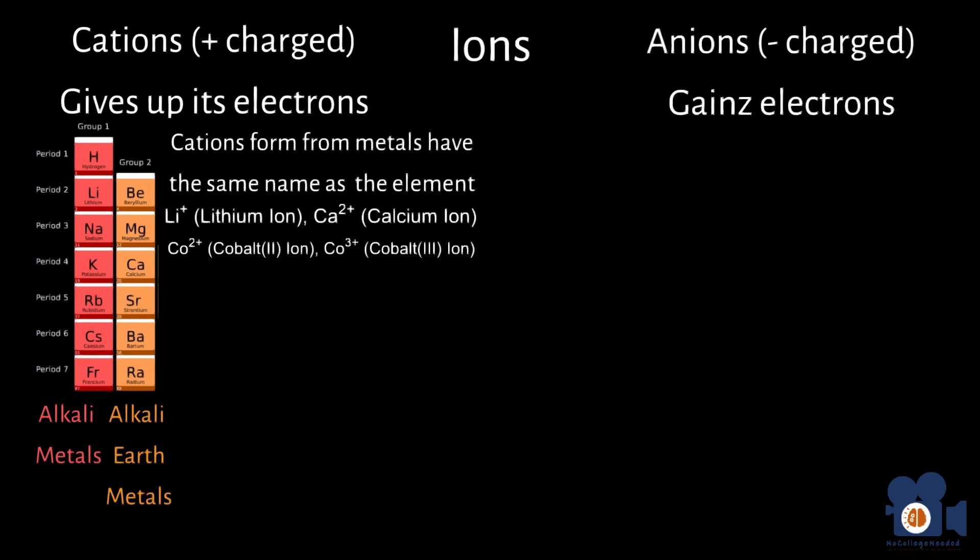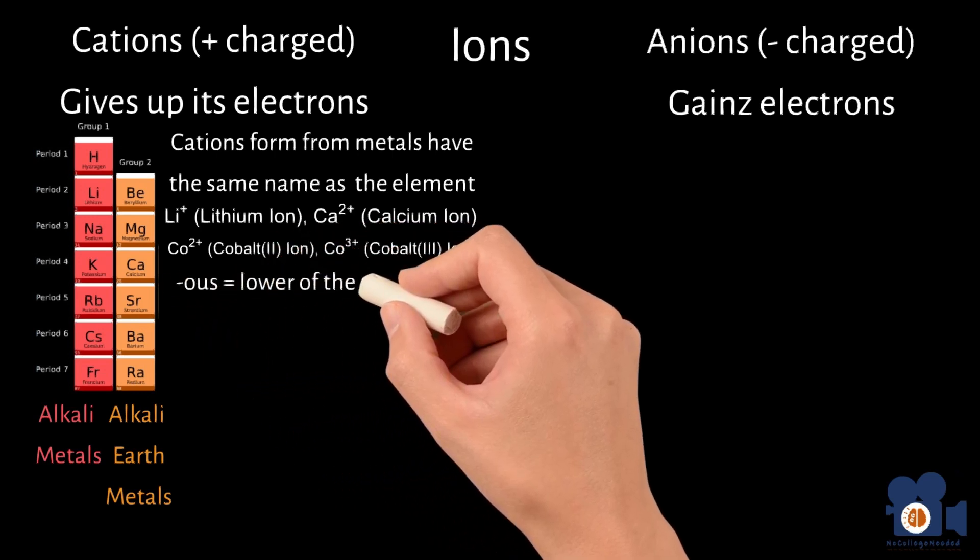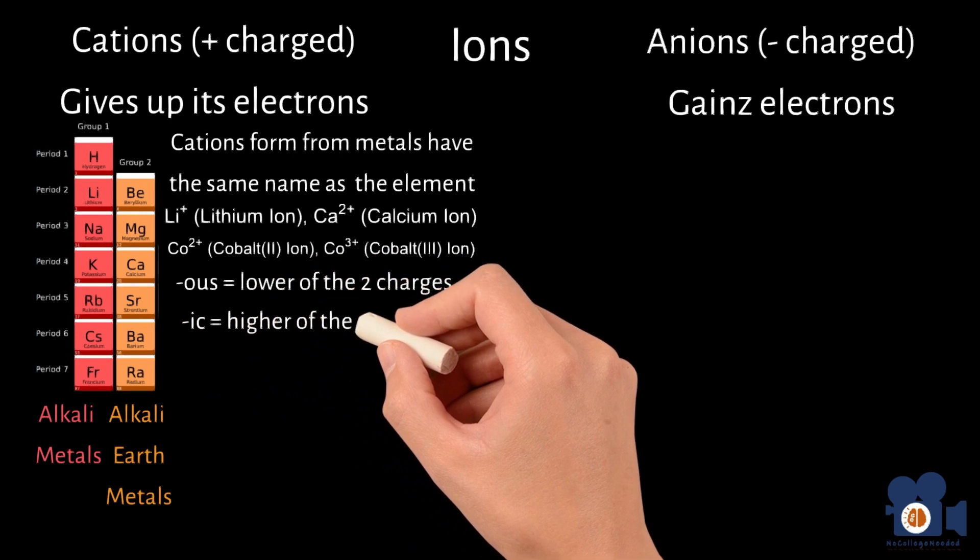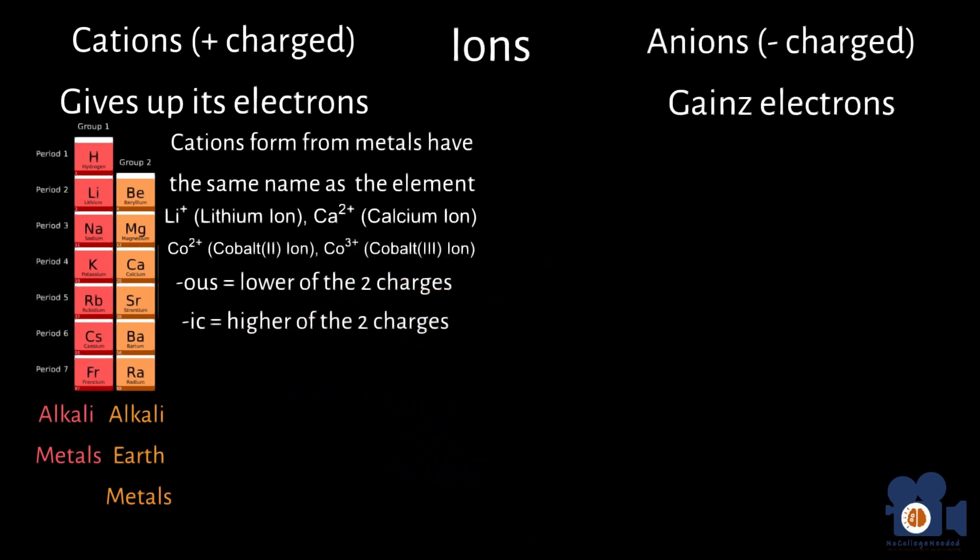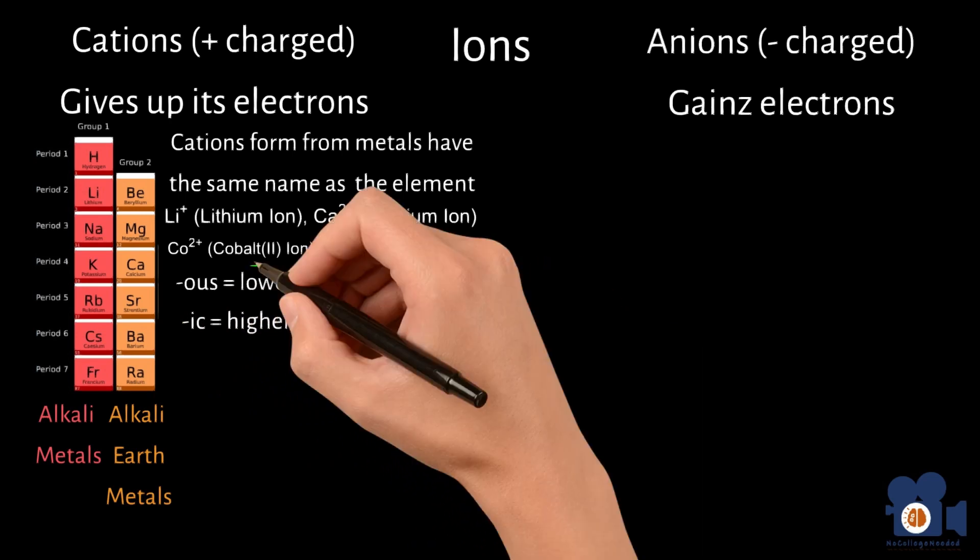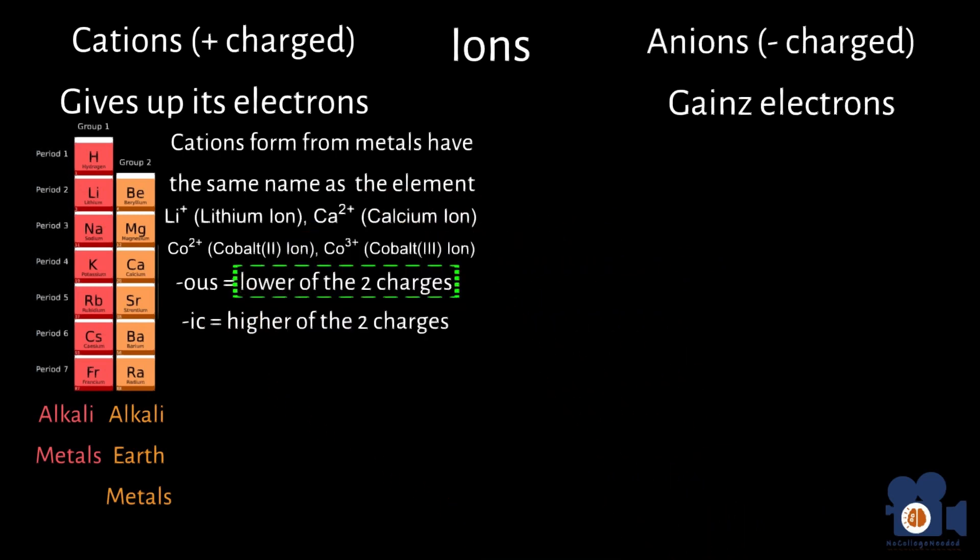Sometimes you will also see the ending of OUS and IC attached to the element's Latin name. In this case, the OUS delineates the lower of the two charges, and the IC is for the higher, such as the ferrous ion for Fe2+, and the ferric ion for Fe3+, while the Cu+ is cuprous, and Cu2+ is the cupric ion.